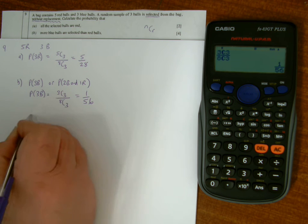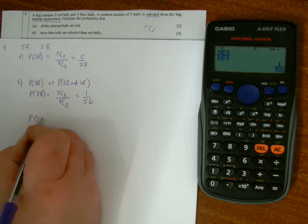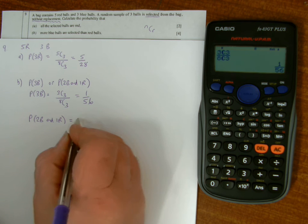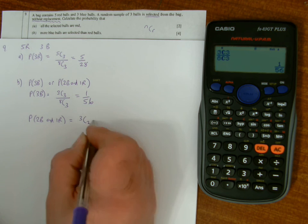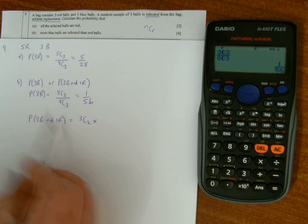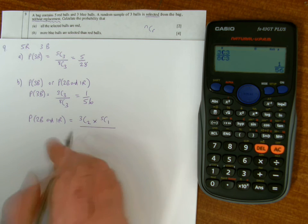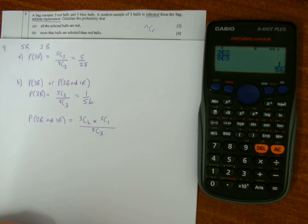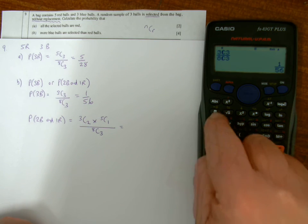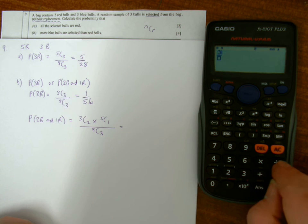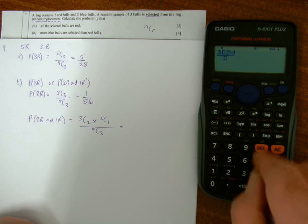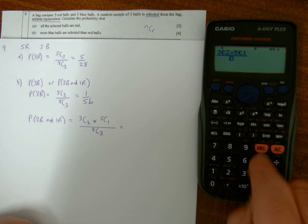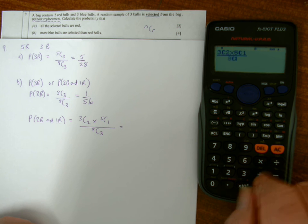And then two blue and one red. So to get two blue, I'm choosing two from three, so it's three choose two, times one red, I'm choosing one from five, so it's five choose one, all over choosing three from eight, which is the total number of combinations of three. Fraction button, so I've got three choose two times five choose one, and on the bottom, eight choose three. That's 15 over 56.